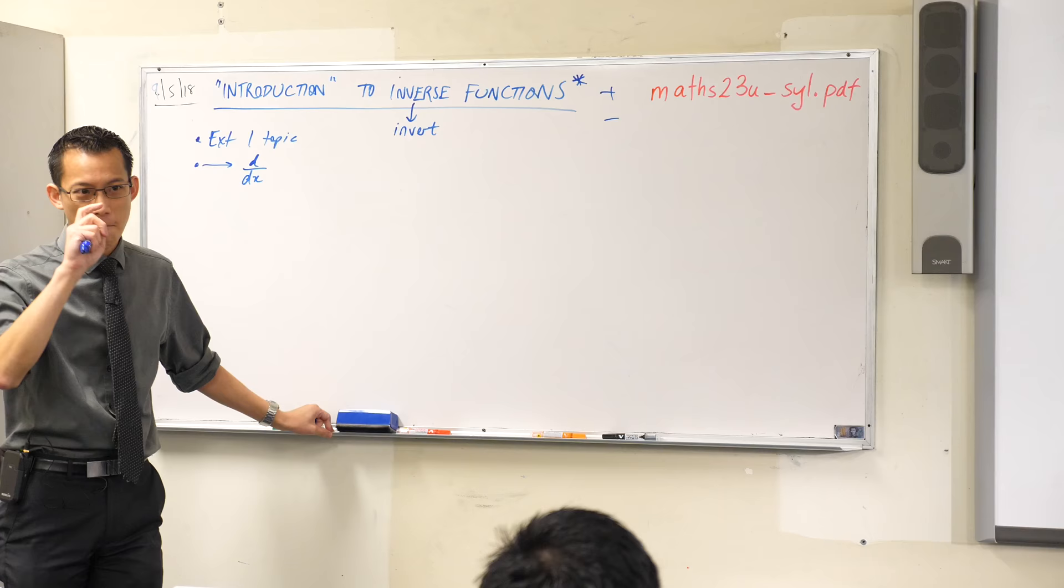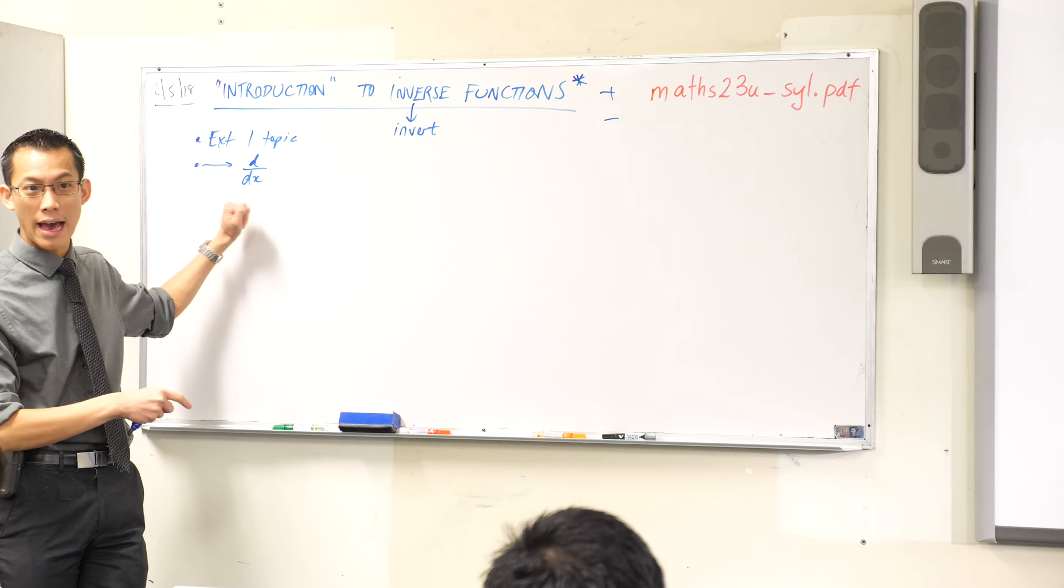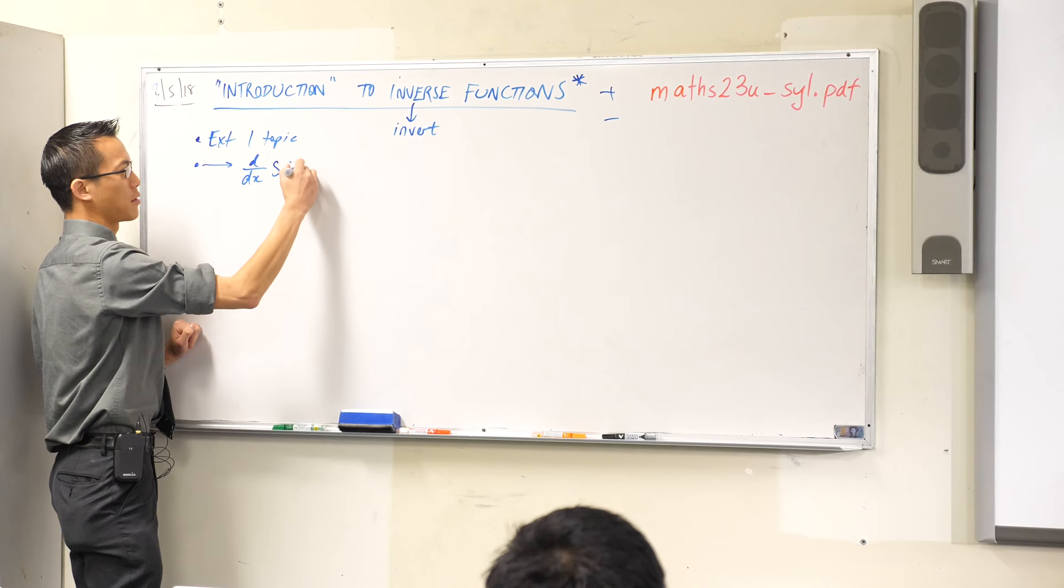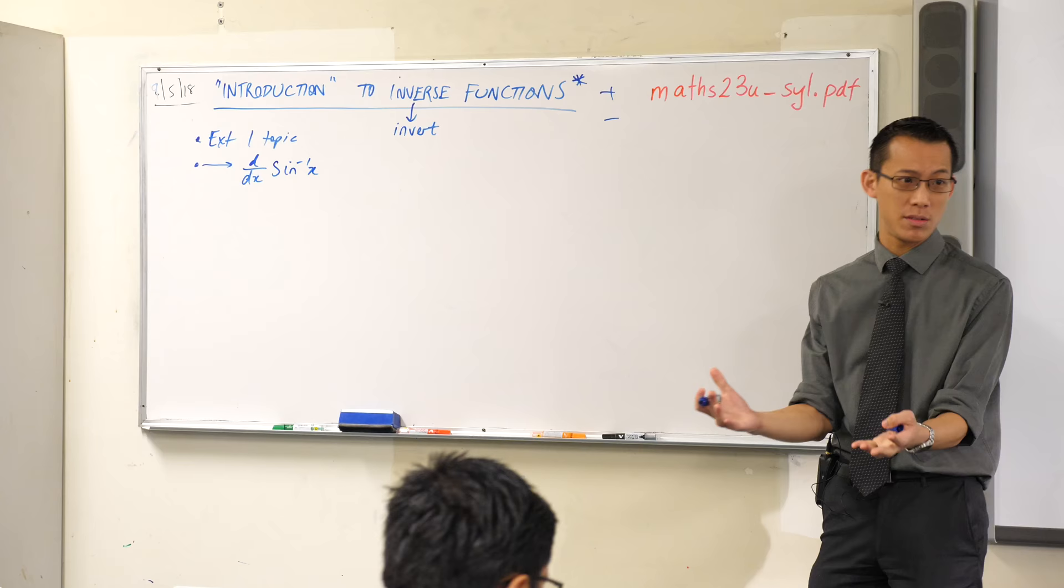There's one left. There's one left, one family of functions that you've worked with, but you don't know how to differentiate them yet. And that's, as you can see by the title, that's these guys. Sine inverse, cos inverse, tan inverse. We know how to work with them. We've used them since year 9, when you were trying to find out the angle in a right angle triangle, and that kind of thing.